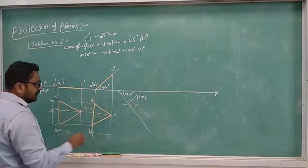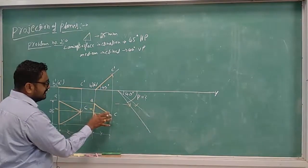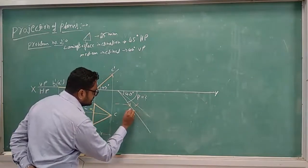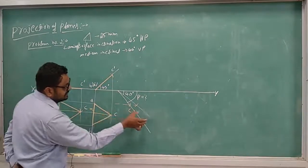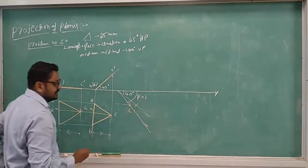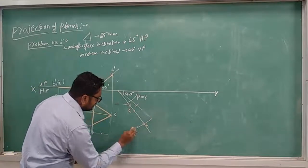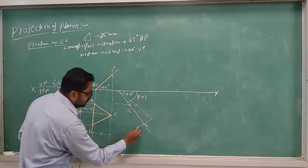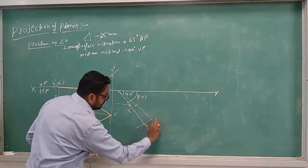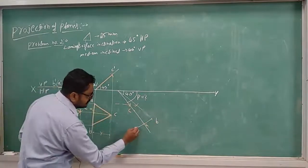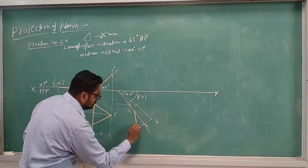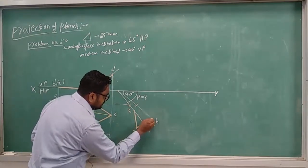After getting the beta angle, mark C on the beta angle line. Measure C to M1, take C as center, and draw an arc to get M1. On M1, draw a perpendicular line on either side for A and B. Measure M1 to B, take center and draw arc to get B. Measure M1 to A, draw arc to get A. Now join A to C, A to B, and B to C to complete the final top view triangle.